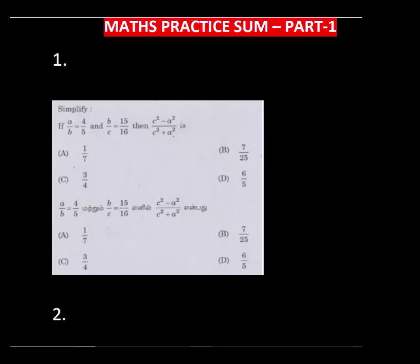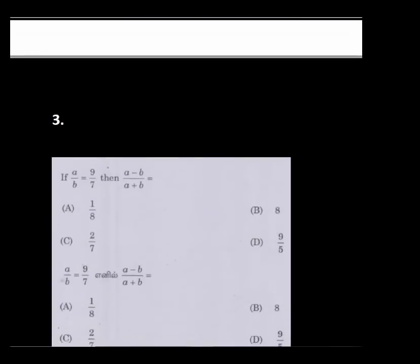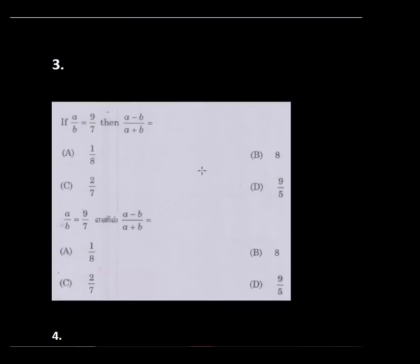If you have 3 sum, you will have simplification. First sum is simplification. Second sum is percentage oriented. Percentage is ratio.